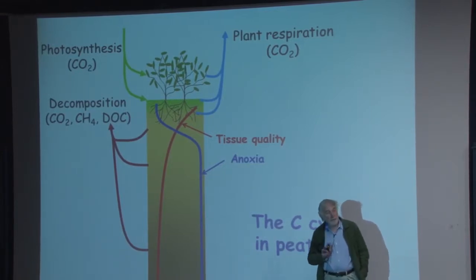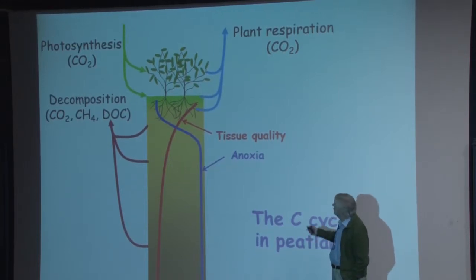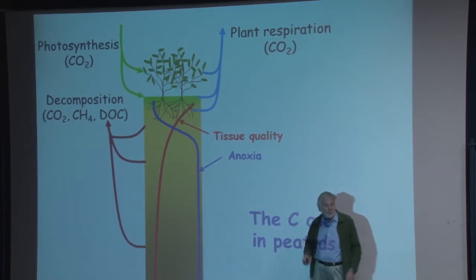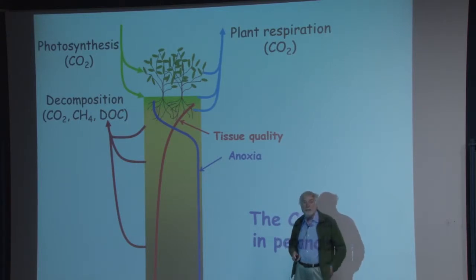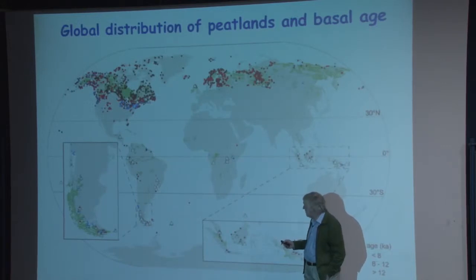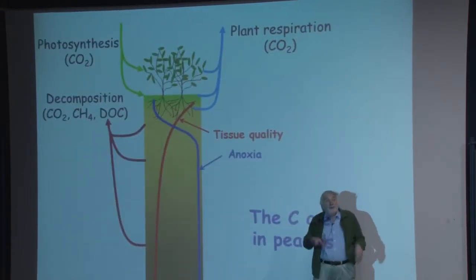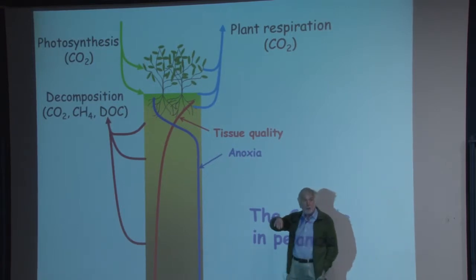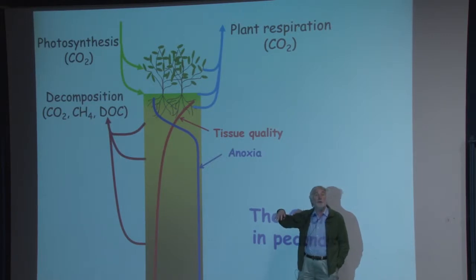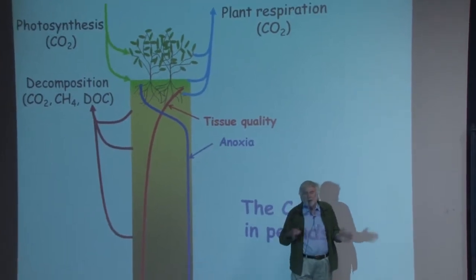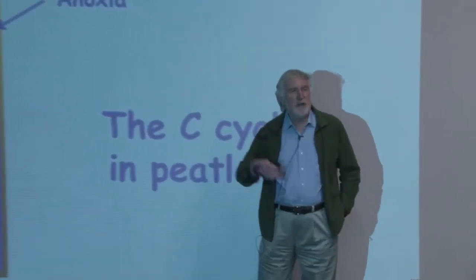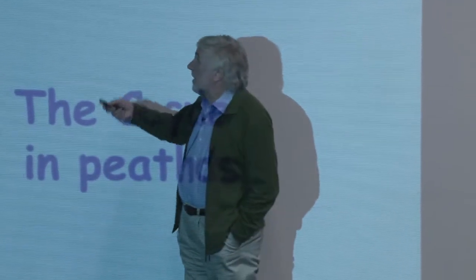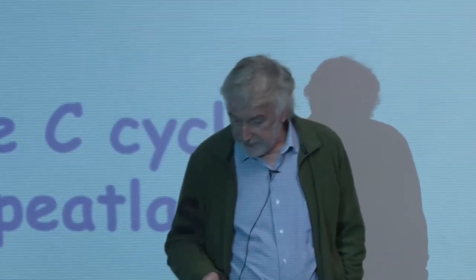The two important controls on carbon accumulation are, firstly, tissue quality — the inherent ability of tissues to decompose. Sphagnum, for example, decomposes very slowly, whereas sedge materials decompose quite quickly. As we go down through the profile we have lower tissue quality because easily decomposable material has already been broken down. Secondly, a high water table creates anoxic conditions, slowing organic matter decomposition. The decomposition rate under anaerobic conditions is about one-twentieth the rate under aerobic conditions.